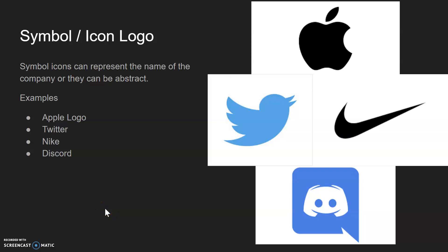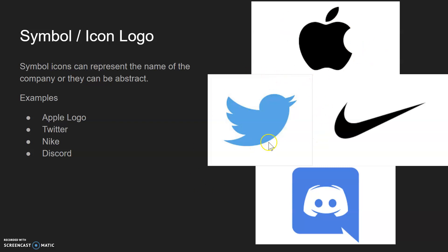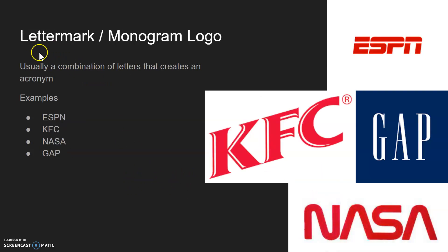Next we have the symbol/icon logo. These are symbol icons that can represent the name of the company, or they can also be abstract. Examples of these are the Apple logo, the Twitter logo, the Nike logo, and the Discord logo.